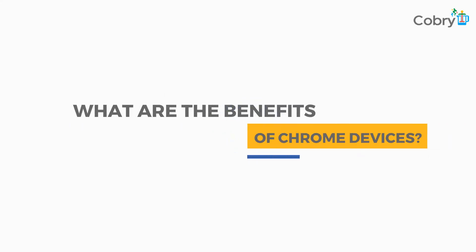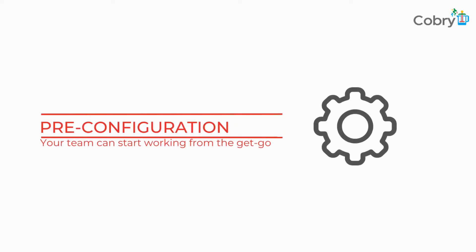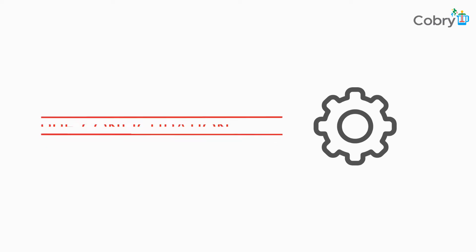You buy a Chromebook and it can be delivered to your door provisioned, so there's no need for an IT team. It can be delivered to your company door ready to go and set up. You give your employee a Chromebook and say just log in using your Google account — you'll have access to all your files, all the security policies, and you don't have to worry about being hacked or downloading a virus.